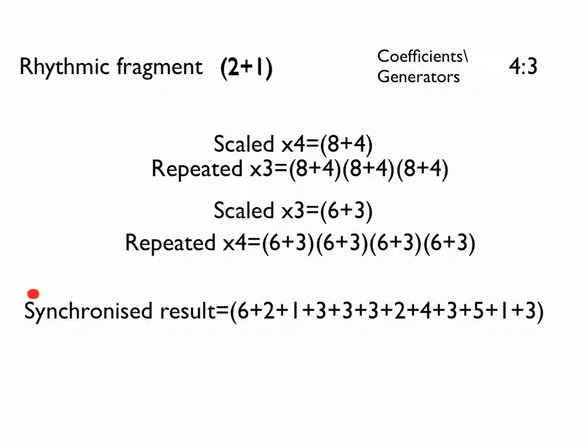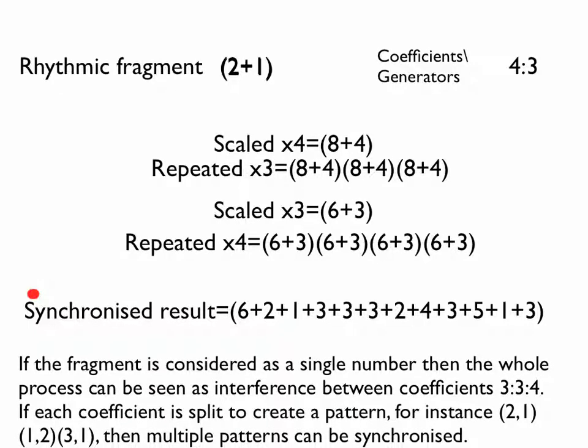In effect, the fragment is a third generator, 2+1=3, and so in this example, the ratio of generators becomes 4:3:3, or 4×3×3, which accounts for the total duration of 36 time units. You can probably see that the durations of rhythms produced in this way can quickly become very long, and some kind of software calculator is clearly the best way of proceeding.